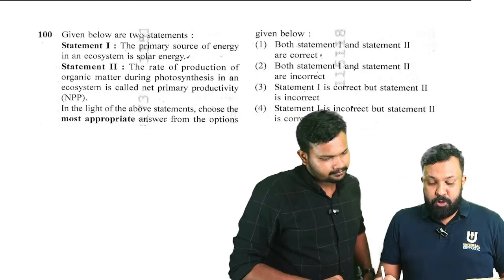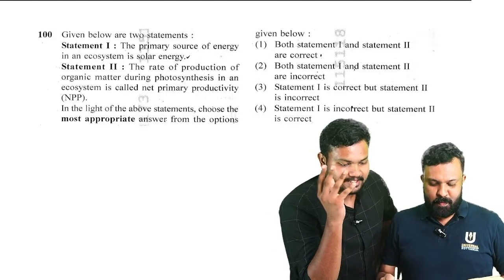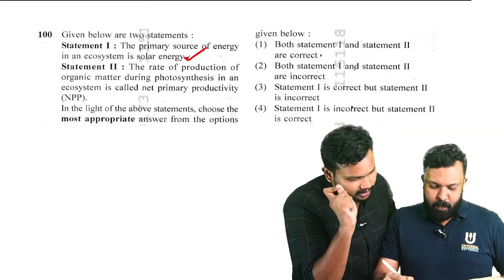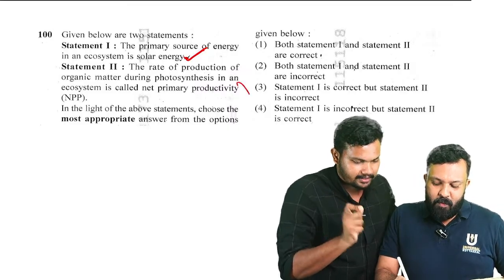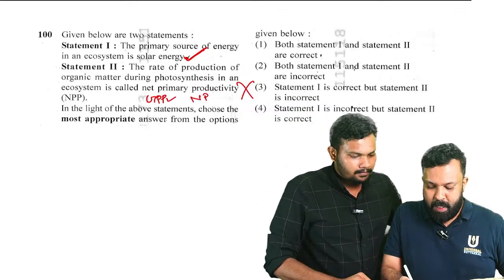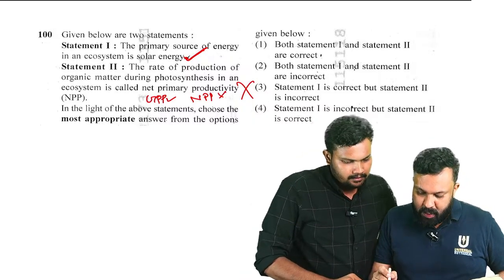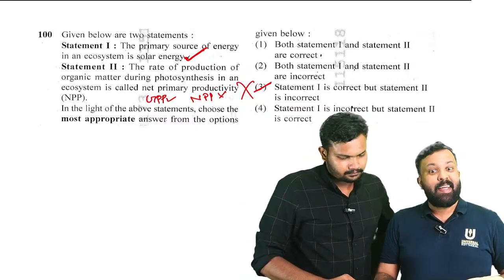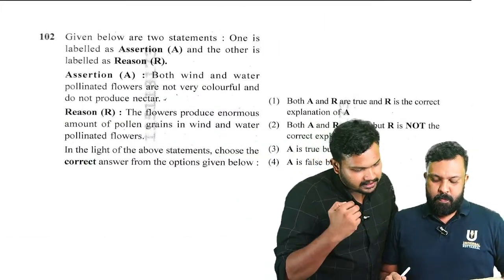Question number 100: given below are two statements. Statement one: the primary source of energy in an ecosystem is solar energy. Statement two: production of organic matter during photosynthesis in an ecosystem is called net primary productivity (NPP), but it should be gross primary productivity (GPP). So statement one is correct but statement two is incorrect — option three is the right answer.